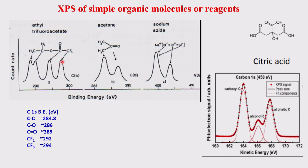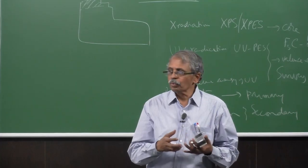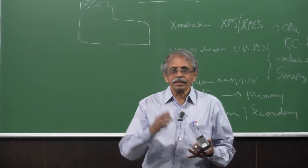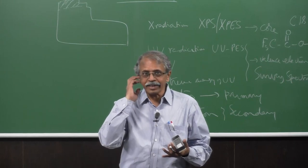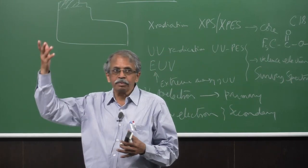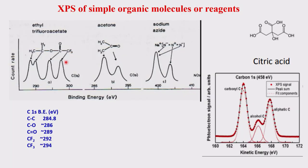The kinetic energy measured will be less for higher binding energy carbons. So the more electronegative groups attached, the greater the binding energy, and the lower the measured kinetic energy. This is directly observed in the spectrum: the CF3 carbon appears at highest binding energy, and the CH2 appears at lowest. This demonstrates the chemical shift concept in XPS — the binding energy shifts based on the chemical environment of the atom.